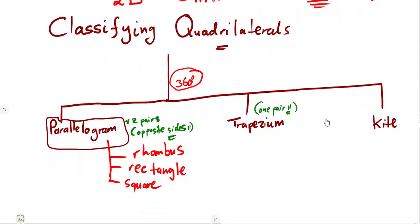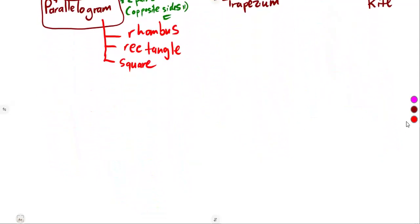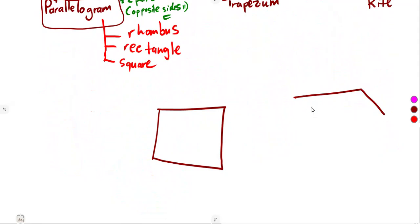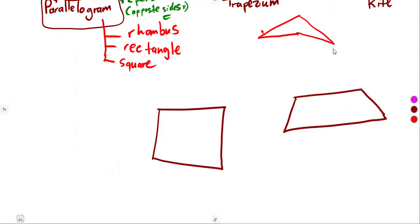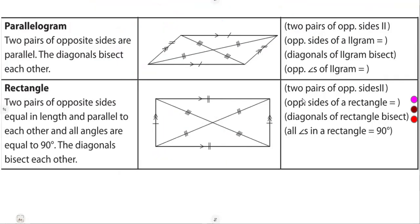So guys, for any four-sided shape, don't be afraid of the diagrams. The interior angles will always add up to 360 degrees. You can have an unusual-looking four-sided shape — one, two, three, four sides — it's still a quadrilateral, not a triangle. This is just a revision since we covered this in grade 8.